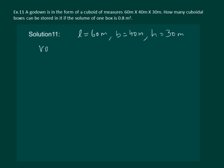Then volume of godown is equal to length into breadth into height which is equal to 60 into 40 into 30, that is equal to 72,000 meter cube.